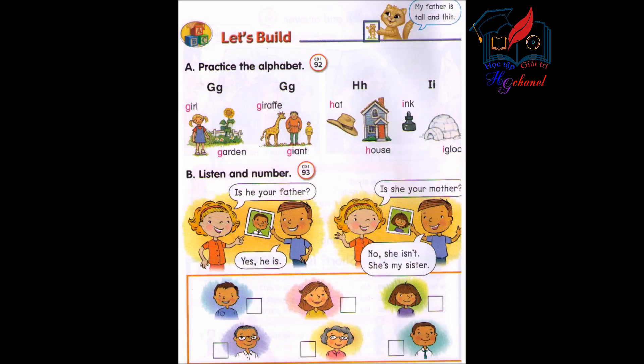Track 92. Let's build. Practice the alphabet.